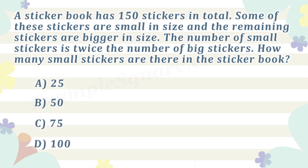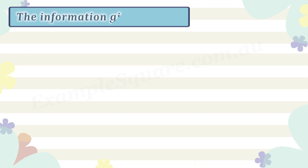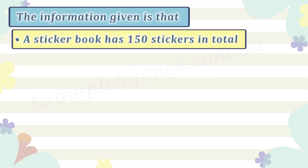A sticker book has 150 stickers in total. Some of these stickers are small in size and the remaining stickers are bigger in size. The number of small stickers is twice the number of big stickers. How many small stickers are there in the sticker book?